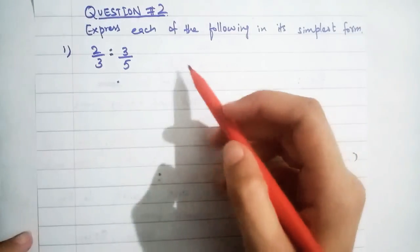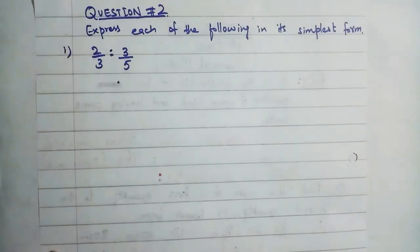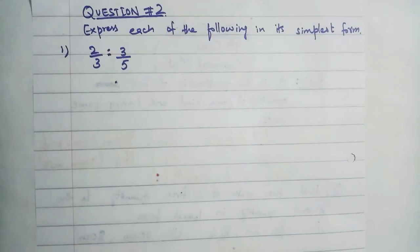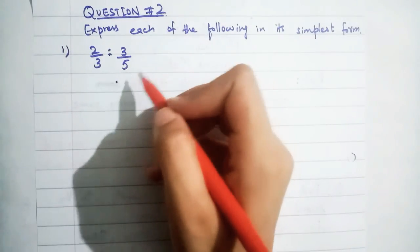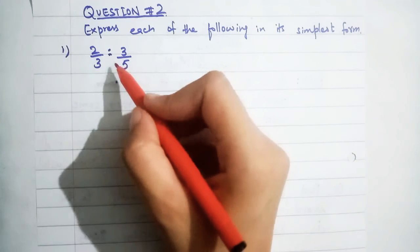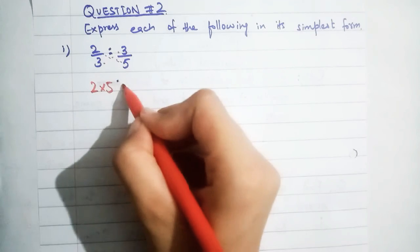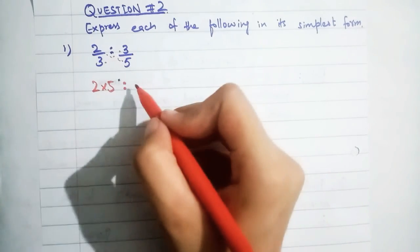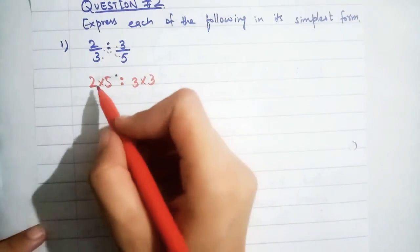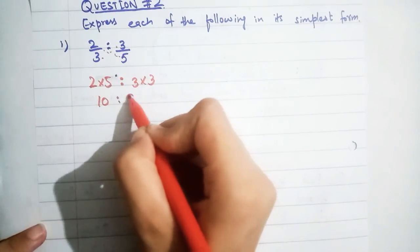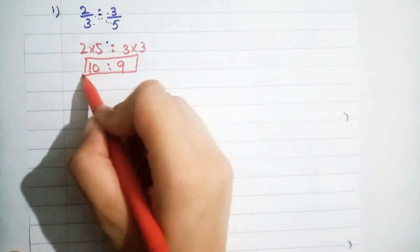Question number two: express each of the following in its simplest form. You can see that the ratio is given in the form of fractions. You have to solve the fractions and express the ratio in simplest form. To do this, simply perform cross-multiplication.